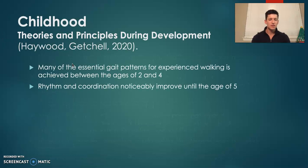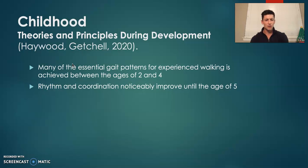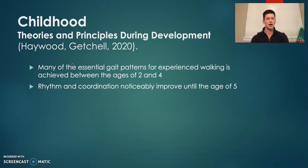Theories and principles during this stage of development. During the childhood stage, many of the key gait patterns for experienced walkers tend to be achieved. It's typically around the ages of two to four. Noticeable changes can be seen throughout this phase all the way up until about the age of five, specifically with rhythm and coordination. After the age of five, there are improvements in development, but they're not as noticeable.